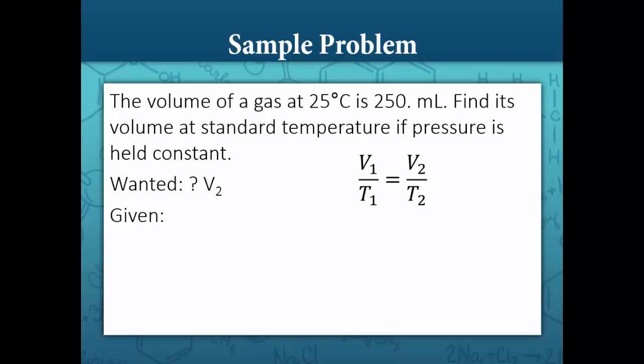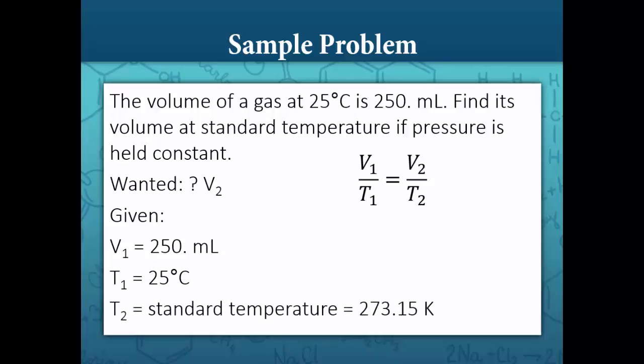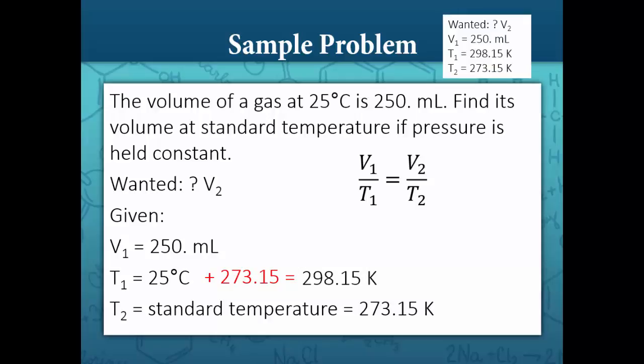We're given a volume of 250 milliliters, an initial temperature of 25 degrees Celsius, and a final temperature of standard temperature, which is 273.15 Kelvin. For all gas problems we need to have temperature in Kelvin. To convert 25 degrees Celsius to Kelvin, we add 273.15, and we get 298.15 Kelvin.